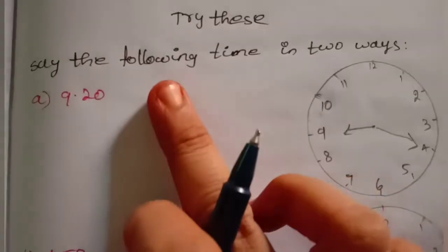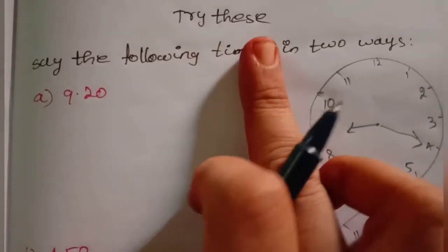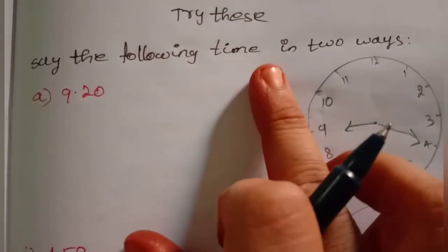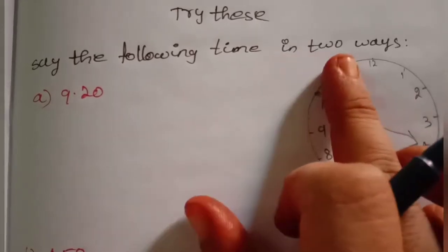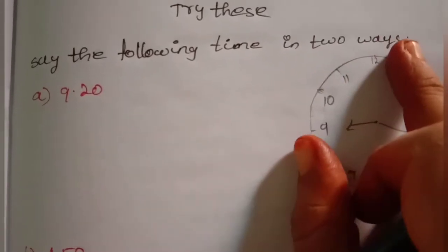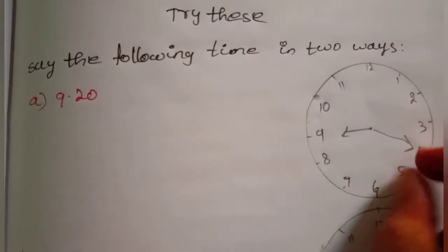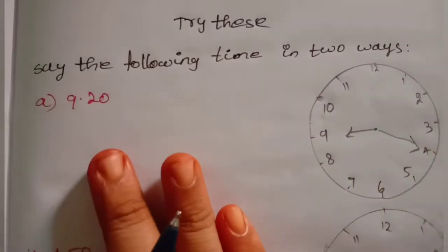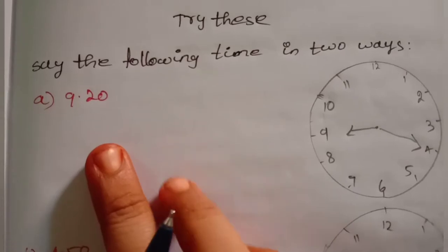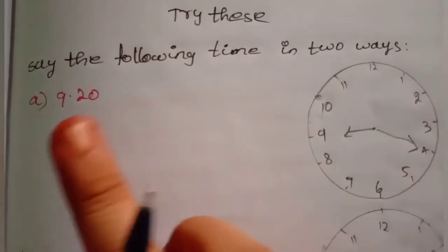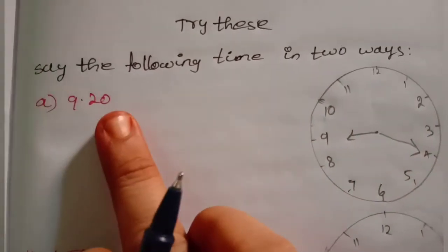Okay friends, next try this — say the following time in two ways. Two ways: we say the time and we write it in two ways. Okay, first one: 9:20.